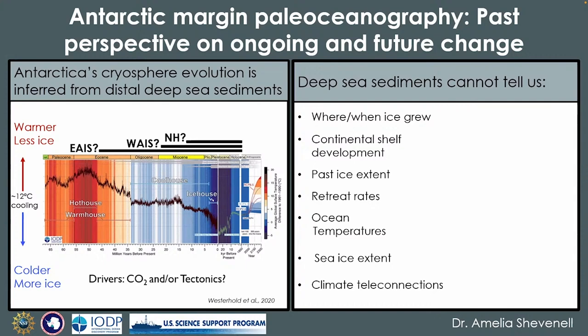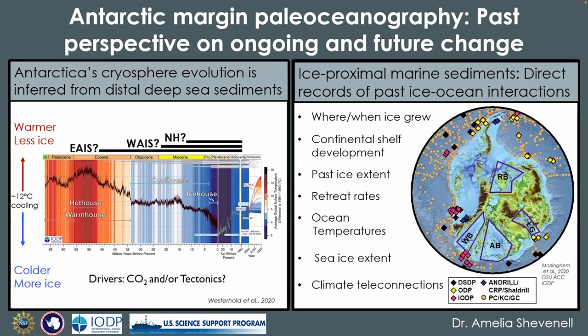Deep sea sediments can't tell us where the ice grew and when, or how the continental shelf developed around Antarctica to enable the ice sheet to grow towards the ocean. We don't know much about past ice extent or past retreat rates unless we have Southern Ocean ice-proximal sediments containing records of past ice-ocean interactions. We are now able to generate ocean temperature records in the past that enable us to understand the temperature at the ice margin.